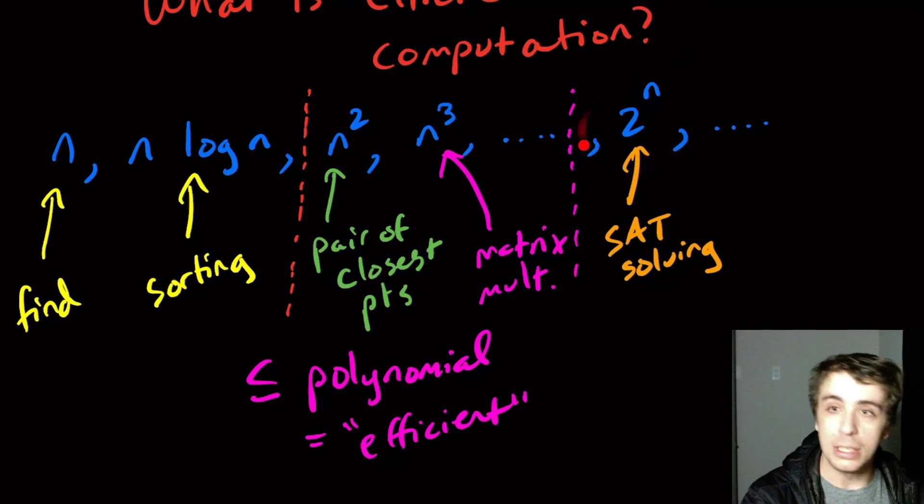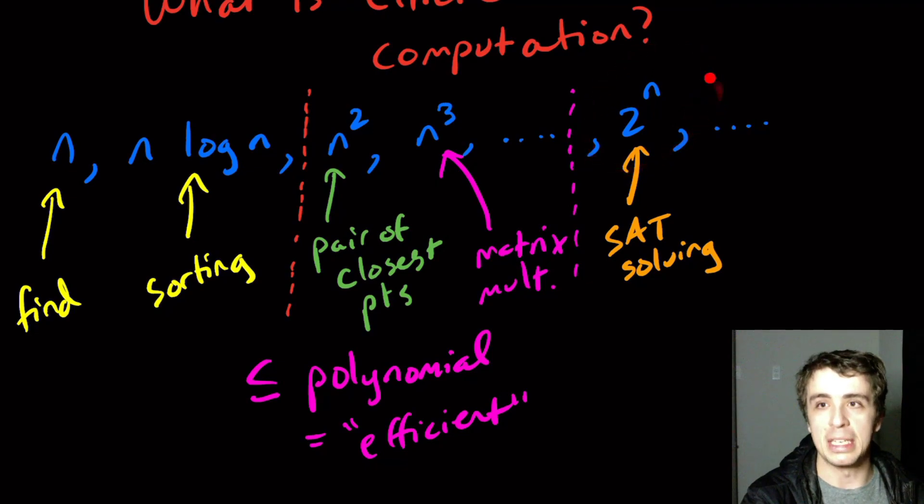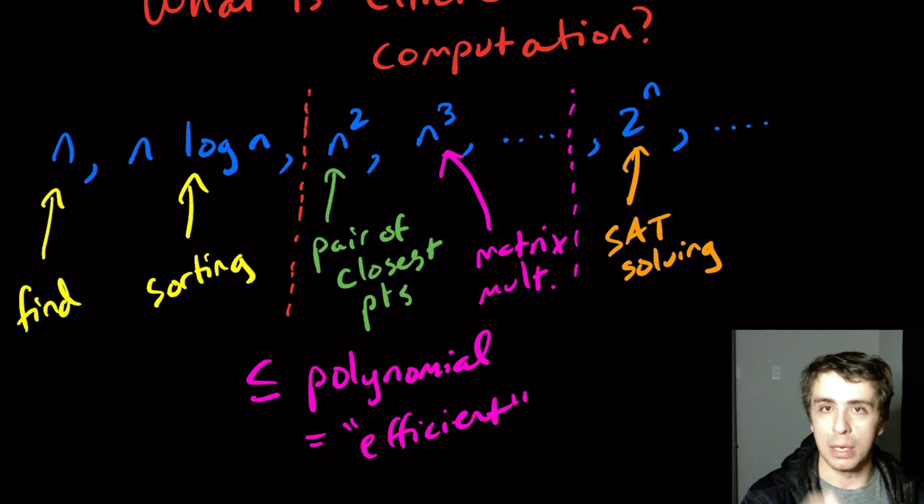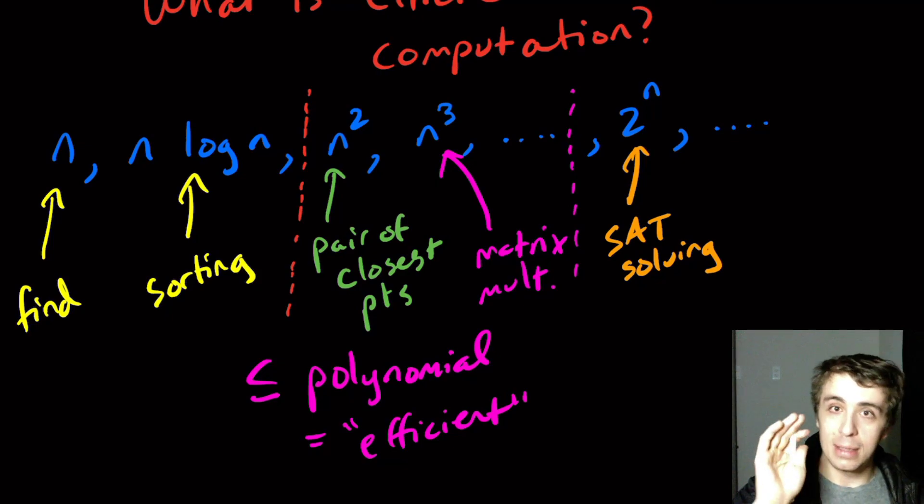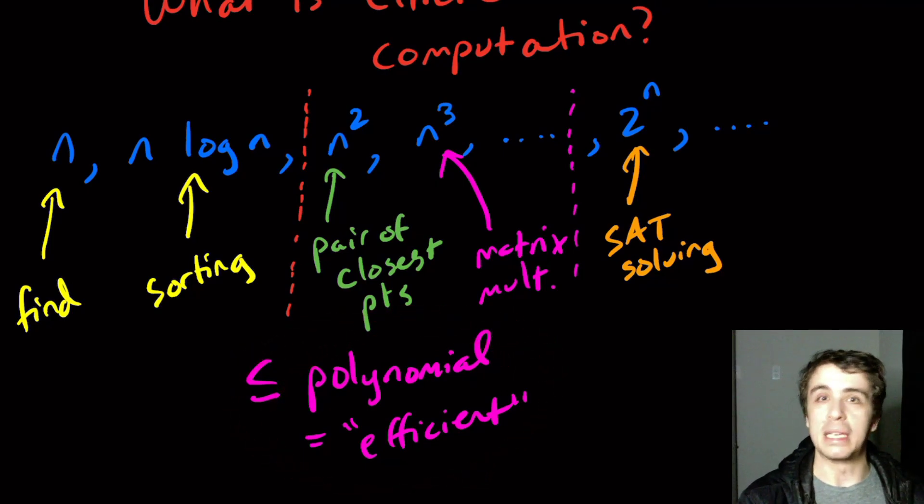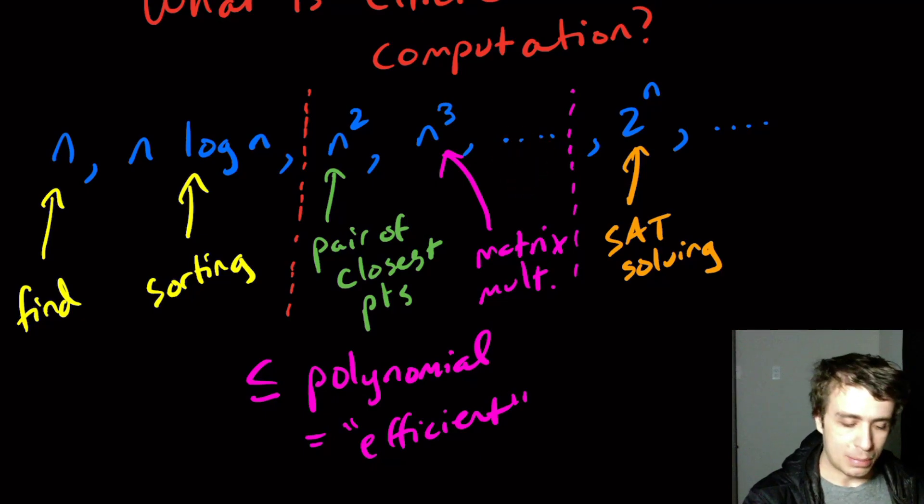It just really depends on what the problem you're dealing with is. Sometimes the best you can do is over here, sometimes you can make it down here, and we obviously want to vie for the low end. We're going to stick with polynomial being efficient because a lot of interesting problems are not known to be in this set at all. We know them to be over here but we don't know if they're in here.